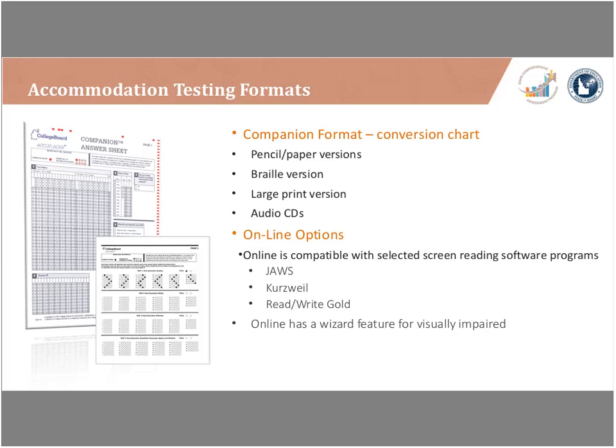One thing to point out: the paper-pencil companion format is longer than online. When explaining this to students and parents, they would often opt for the online version. With computer adaptive testing, fewer questions are needed to determine skill level. With the linear paper-pencil format, more questions are required to get the same information. Also important: for Accuplacer, accommodations are all decided locally — nothing needs to be approved like with other College Board assessments.